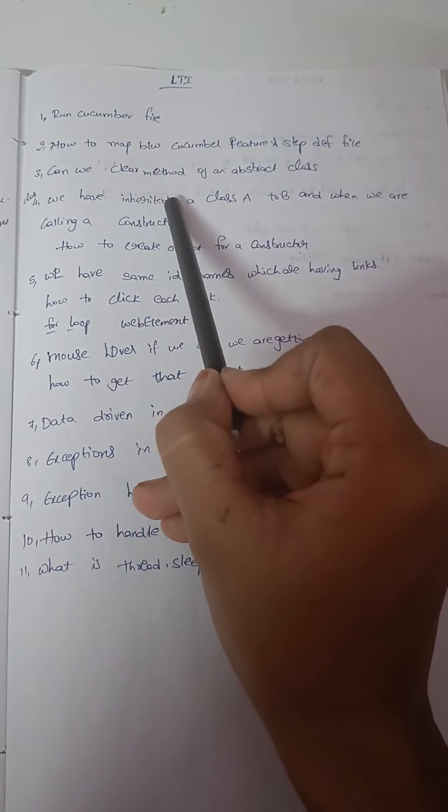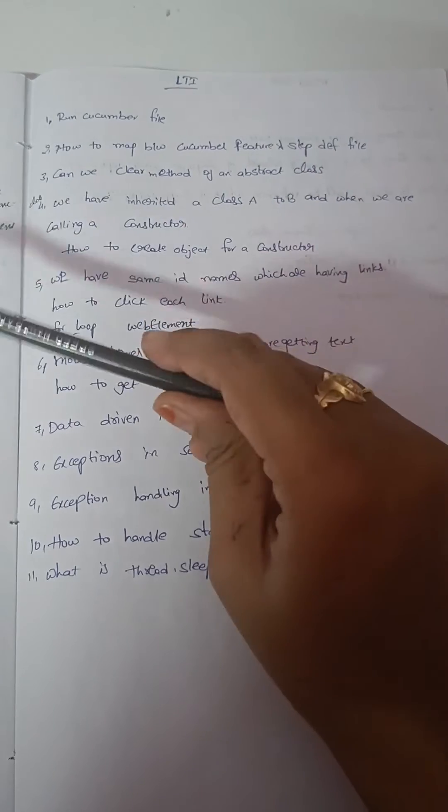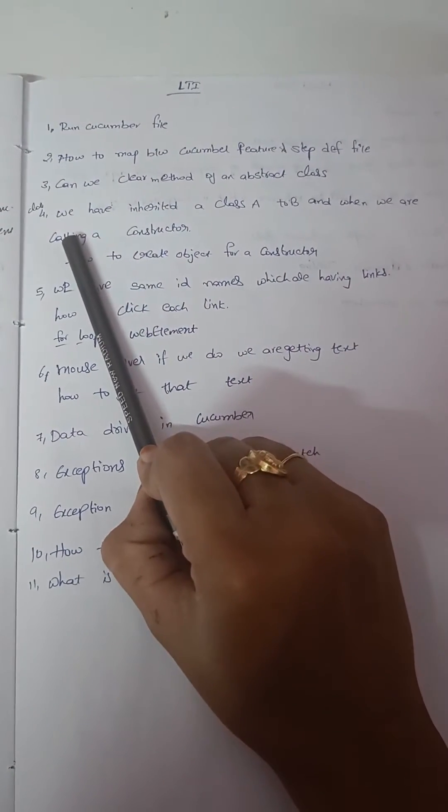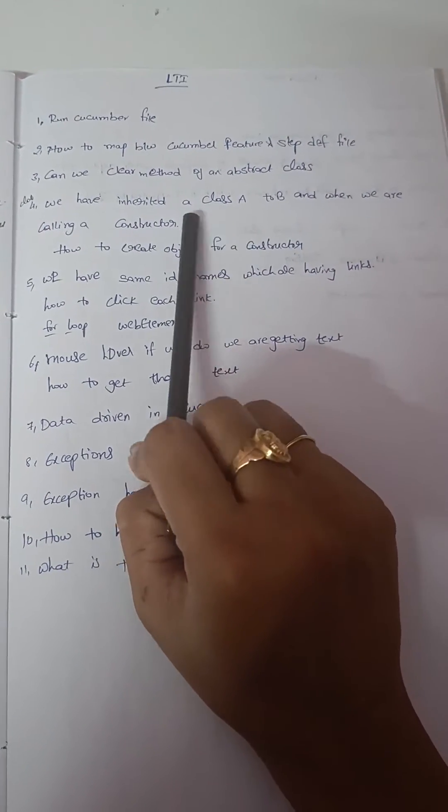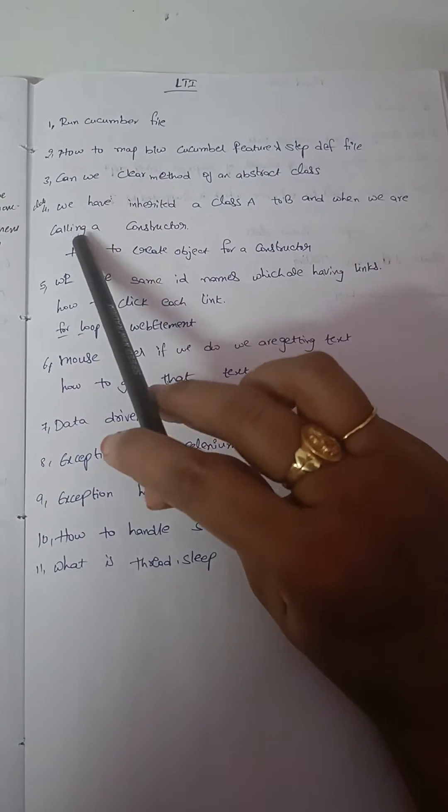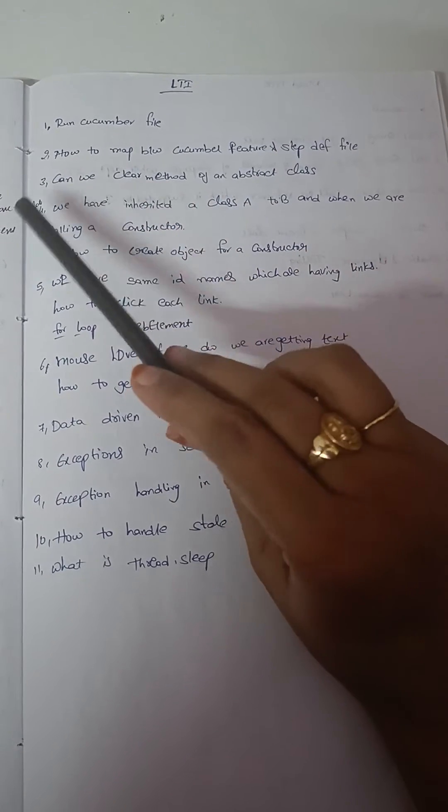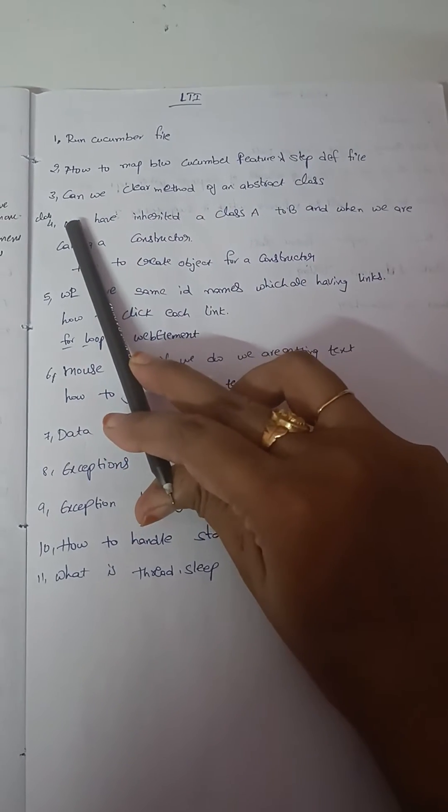Third question: can we override a clear method of an abstract class? Fourth question: we have inherited class A to B, and when we are calling a constructor, how to create an object for a constructor?